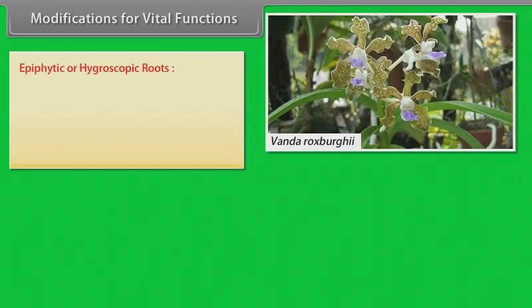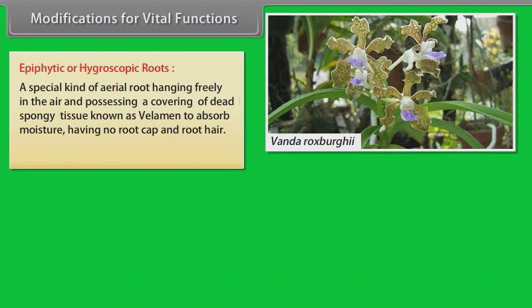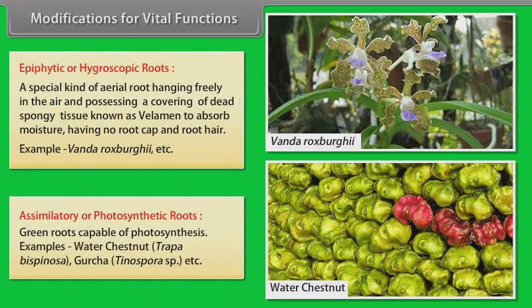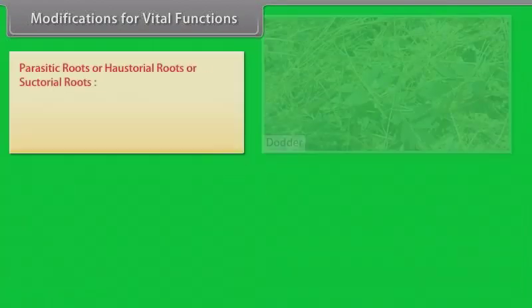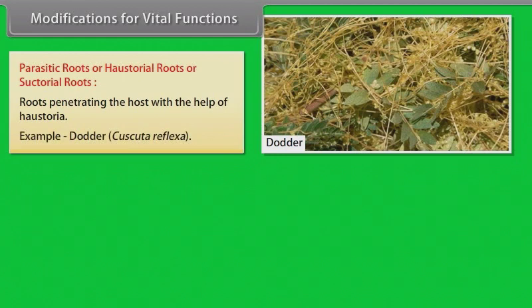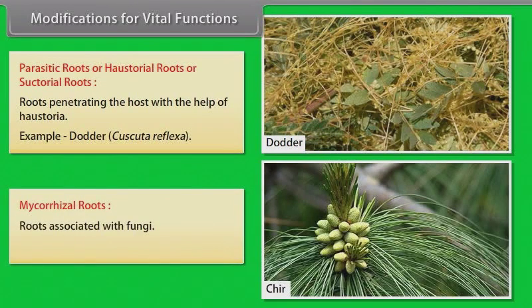Modifications for vital functions. Epiphytic or hygroscopic roots: a special kind of aerial root hanging freely in the air and possessing a covering of dead spongy tissue known as velamen to absorb moisture, having no root cap and root hair. Example: Vanda. Assimilatory or photosynthetic roots: green roots capable of photosynthesis. Examples: water chestnut, Tinospora, etc. Parasitic or haustorial roots: roots penetrating the host with the help of haustoria. Example: Cuscuta. Mycorrhizal roots: roots associated with fungi. Examples: chir, birch, etc.